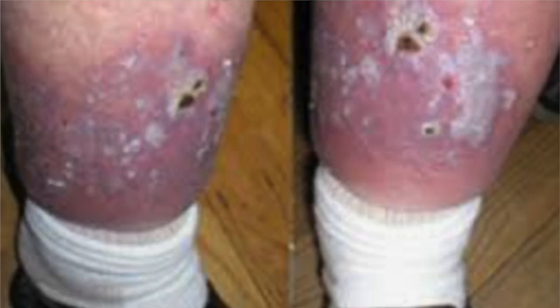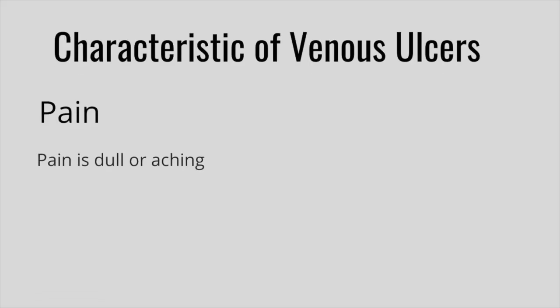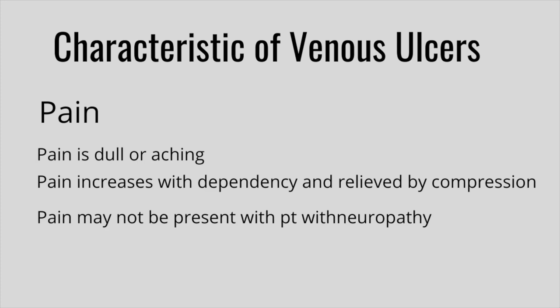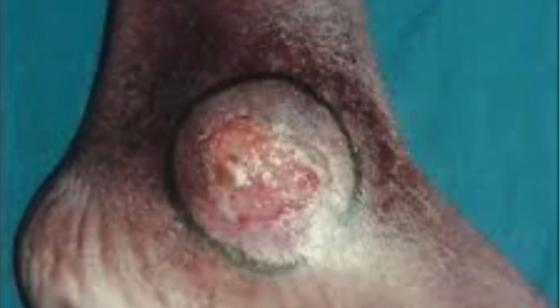Now let's talk about what a venous ulcer looks like. Around the ulcers you'll tend to see a lot of scaling and swelling in the legs. A lot of times when you see edema on the legs, you see blisters popping up. When it comes to pain, it is normally dull or aching and is caused by peripheral edema. The pain increases with dependency. These ulcers are typically located on the medial aspect of the lower leg or the medial malleolus. Patients with venous insufficiency ulcers also tend to see dermatitis or pruritus in the lower leg.